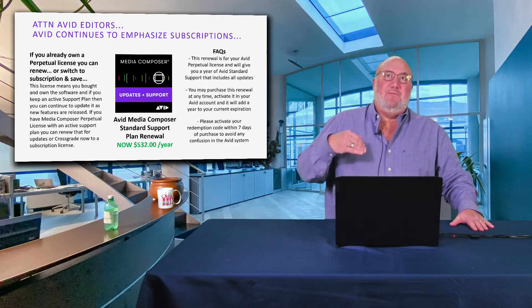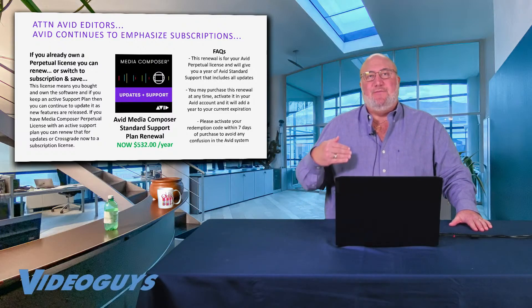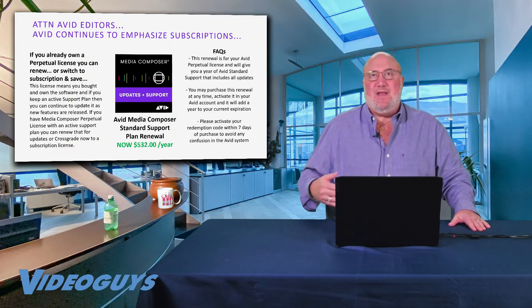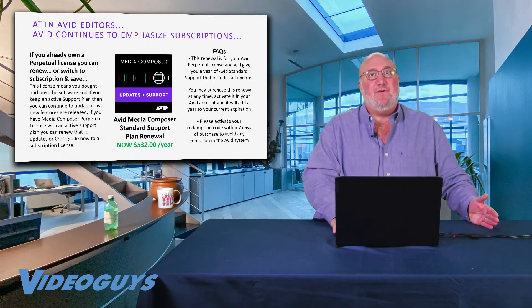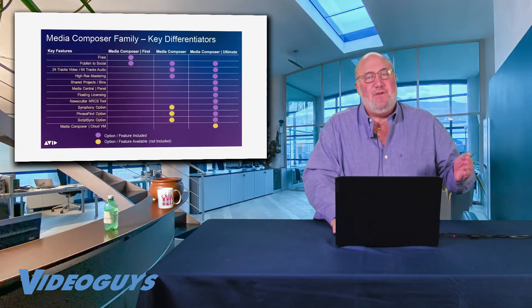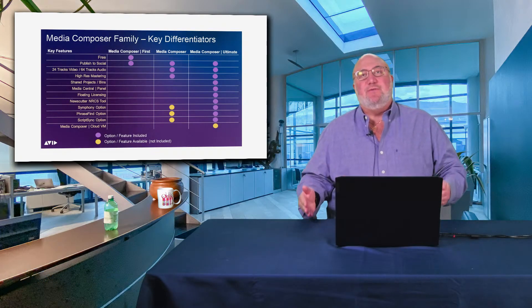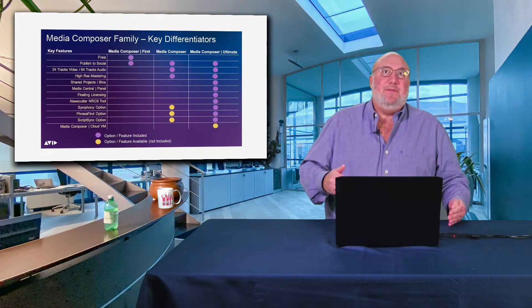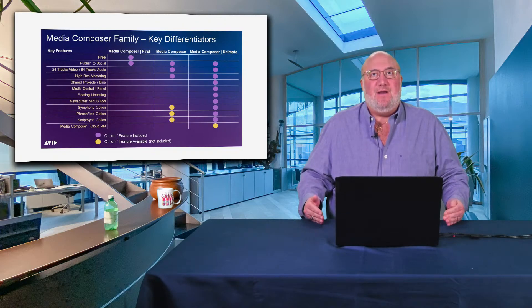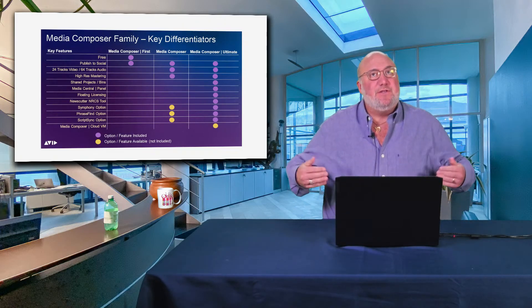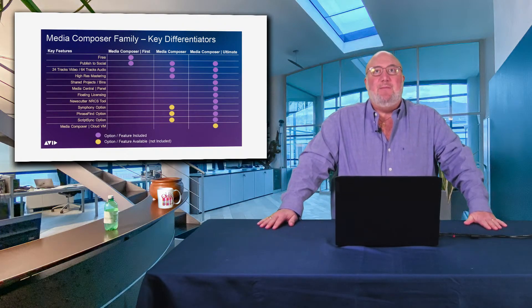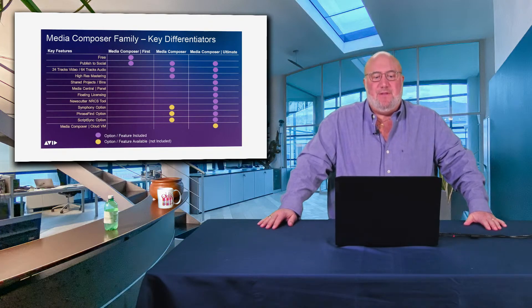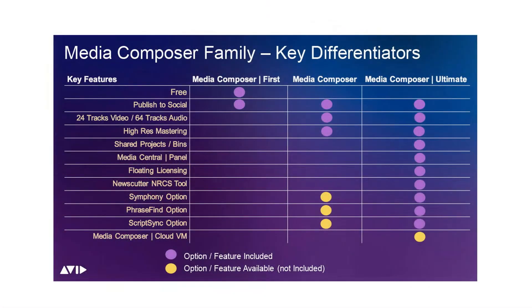If you're in an environment of multiple editors and have to renew yours to work with those editors, I get it — you're all on the same version. But for everyone else, go to the standard version. Or if you're using PhraseFind, ScriptSync, or Symphony, switch to the Ultimate — it'll still be $30 lower per year. If you've never used Avid, you can download Avid Media Composer First, which is a free version to play with.